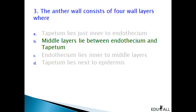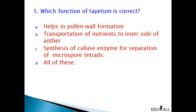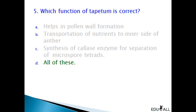Which function of Tapetum is correct? Helps in pollen wall formation; transportation of nutrients to the inner side of the anther; synthesis of Callase enzyme for the separation of Microspore tetrads; or all of the above? Tapetum secretes ubisch bodies which get covered with sporopollenin, increasing the thickness of the exine of the pollen grain wall. Tapetum provides nourishment to developing Microspores and secretes Callase enzyme which dissolves the Callose substance uniting the 4 pollens of a tetrad, thus separating the Microspores. Hence, the right answer is D — all of the above.